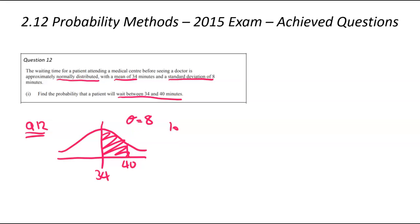I've got to start off with my lower, which is going to be 34. My upper, which will be that 40. The standard deviation will be 8 and the mean will be 34 as well.